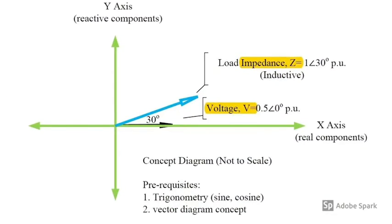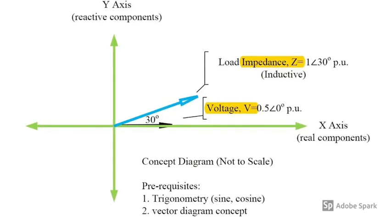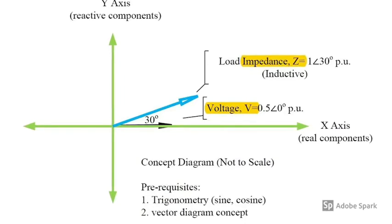An example here: voltage is 0.5 per unit magnitude, 0 degree angle.